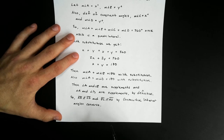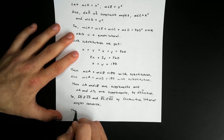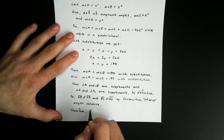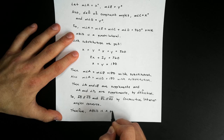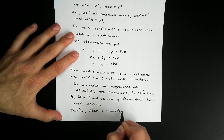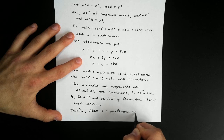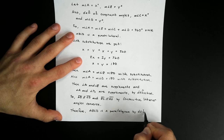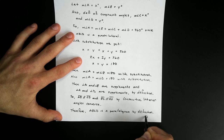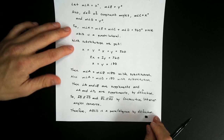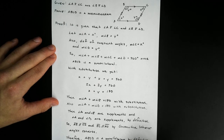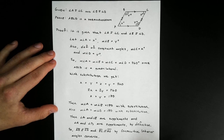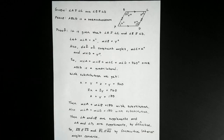Now that we have the opposite sides parallel, we can finish up. Therefore, ABCD is a parallelogram by definition. So, starting with the opposite angles being congruent, we can show that the sides have to be parallel, which in turn means that ABCD has to be a parallelogram. Thank you.